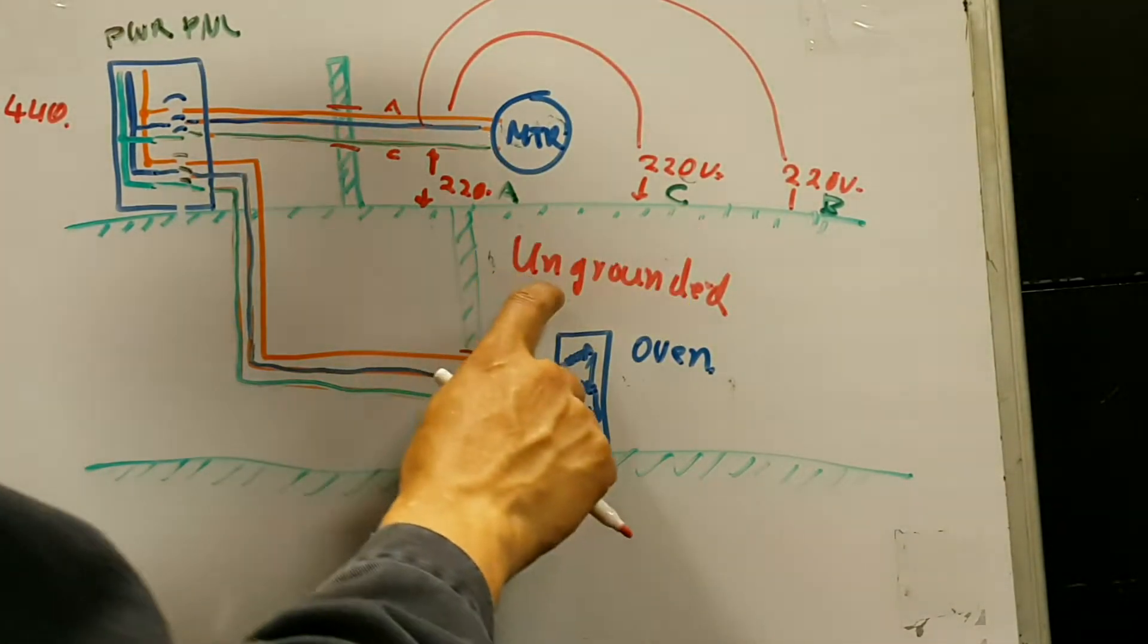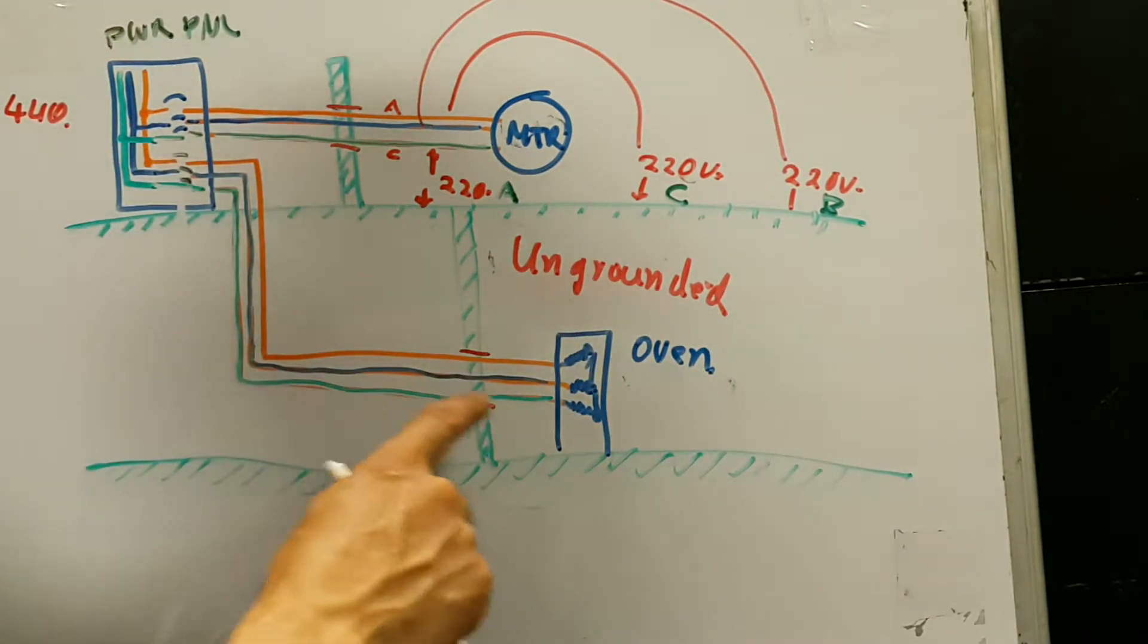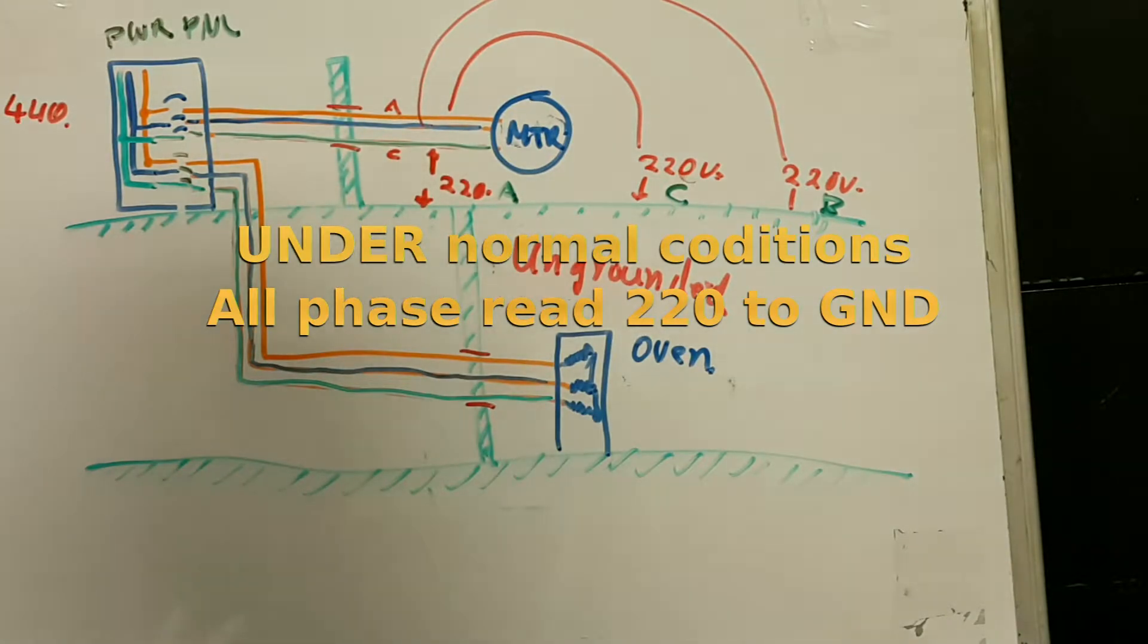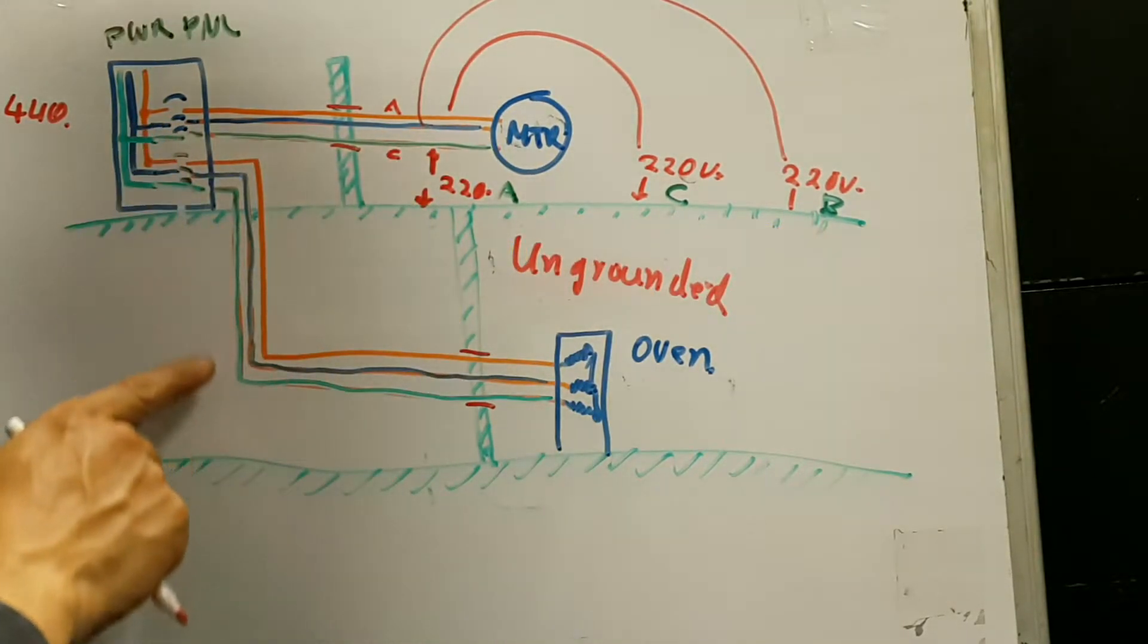The ship is supposed to be ungrounded, meaning that none of the wires will ever electrically touch the ship, at least under ideal conditions. But nonetheless, because there is a lot of wire that runs throughout the ship,